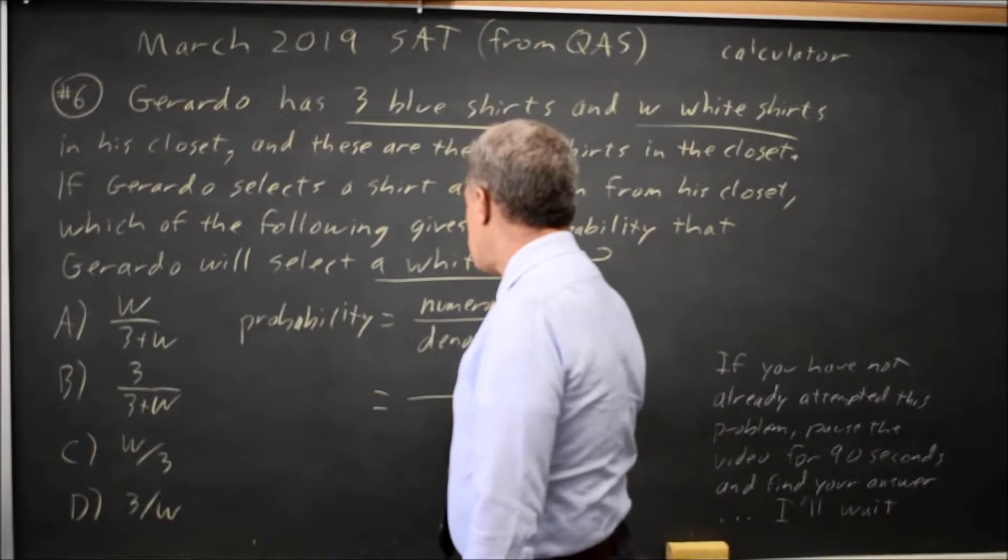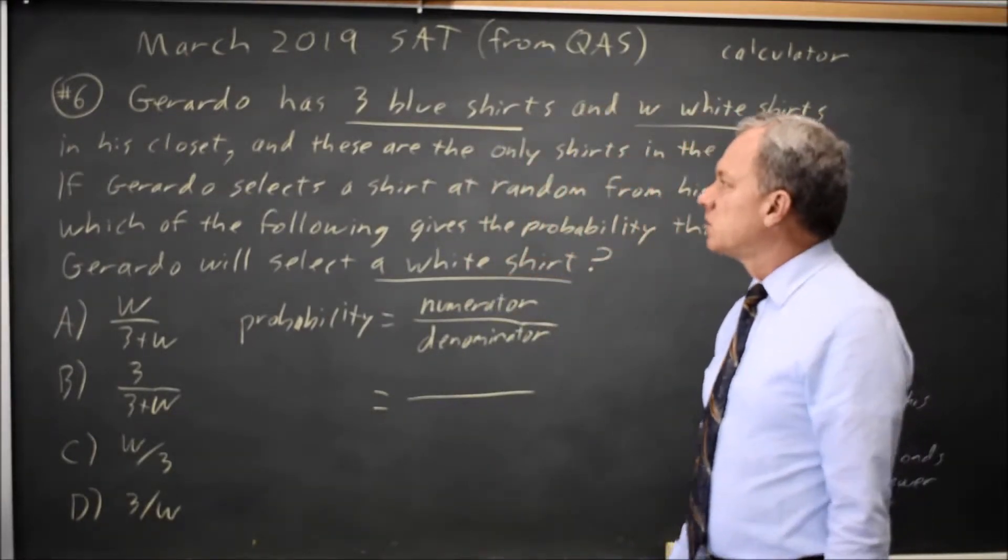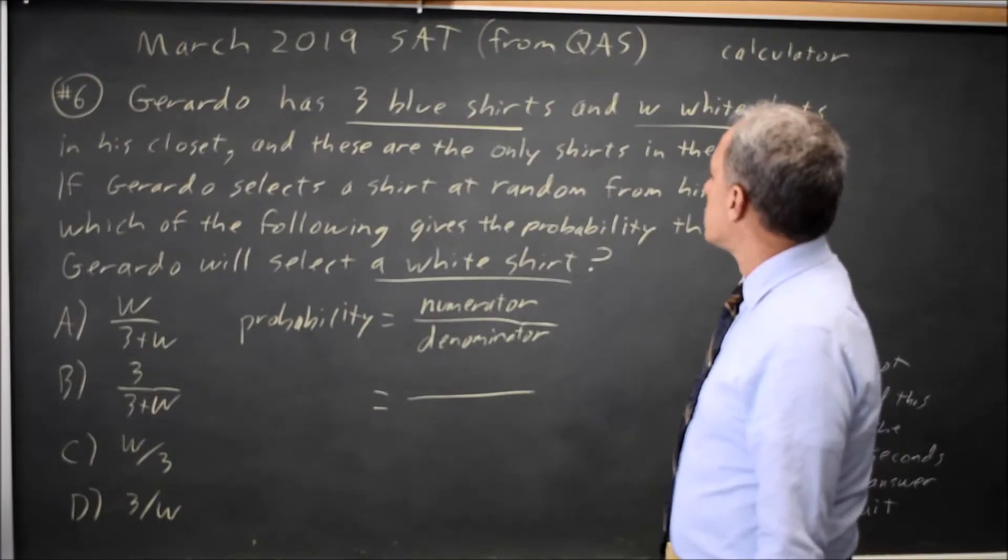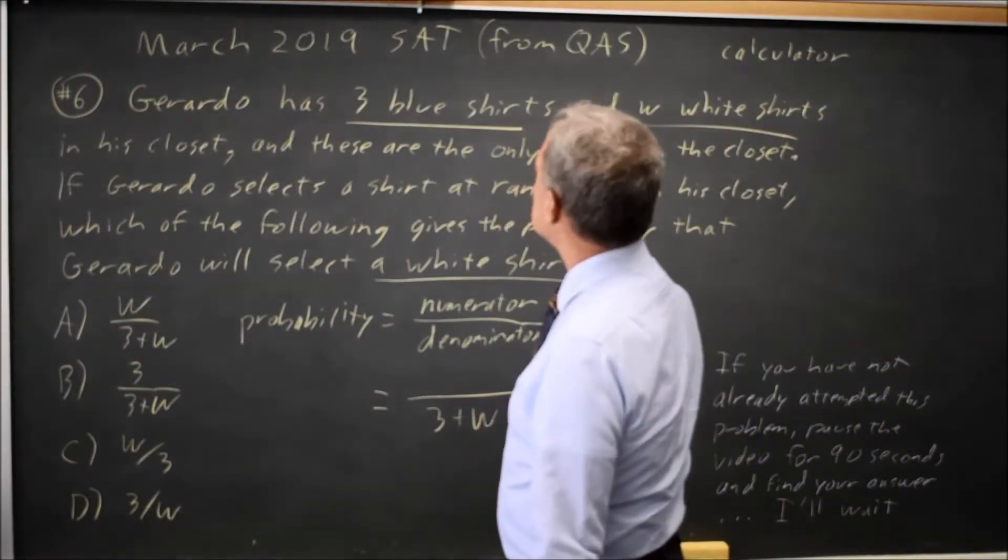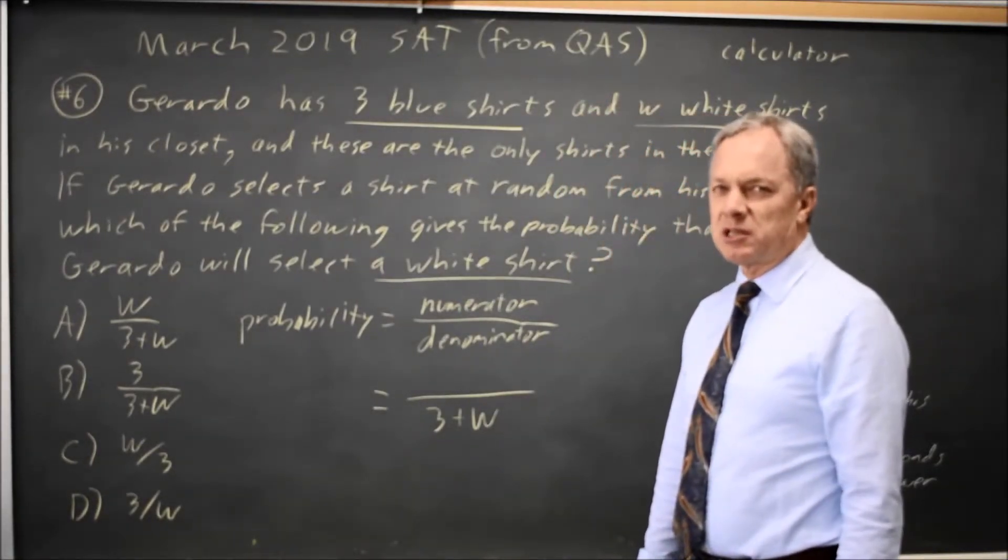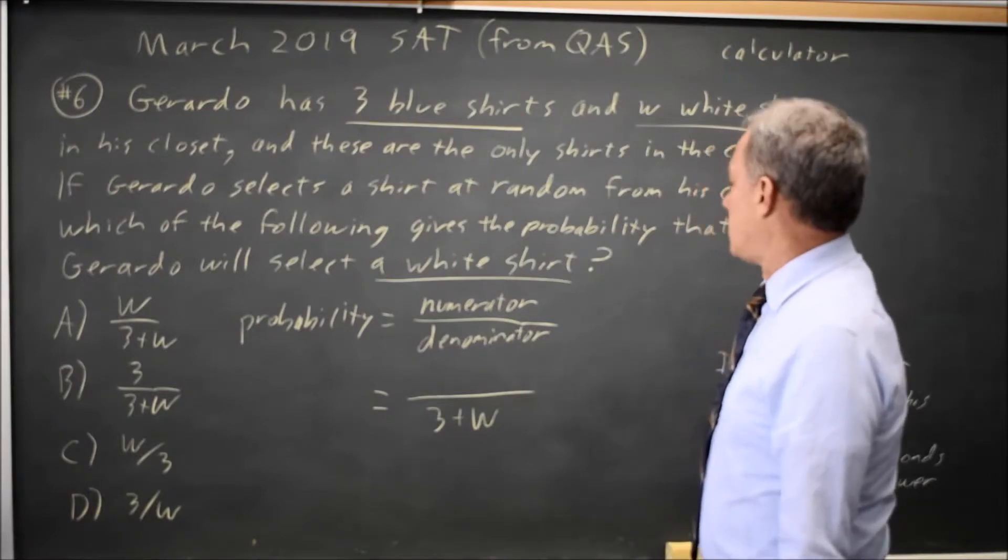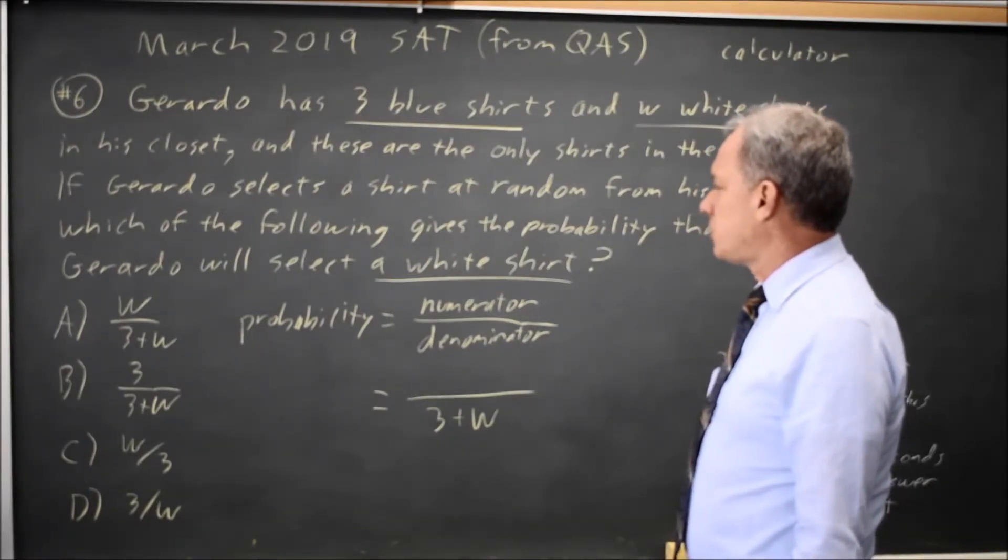For the denominator, that is all possibilities that might be chosen. In Gerardo's shirts, since he has three blue shirts and W white shirts and no other shirts, the total number of shirts he could choose among is three plus W.